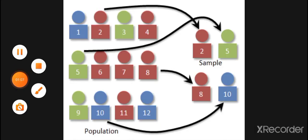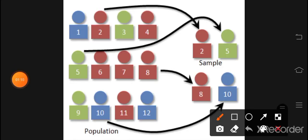Probability sampling includes: simple random, stratified random, systemic sampling, and cluster sampling. In simple random sampling, for example, there are 12 people in a small population. We assign them numbers 1 through 12, and from that sampling frame we use a table of random numbers to select who gets picked.